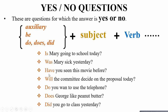Example 3: Have you seen this movie before? 'Have' is the auxiliary reflecting simple present perfect tense. 'You' is the subject, 'seen' is the verb. Example 4: Will the committee decide on the proposal today? 'Will' is the auxiliary, 'the committee' is the subject, 'decide' is the verb, 'on the proposal' is the complement, and 'today' is the time modifier.